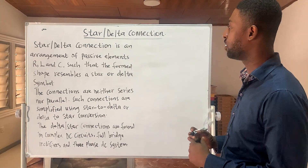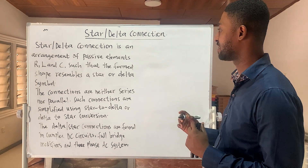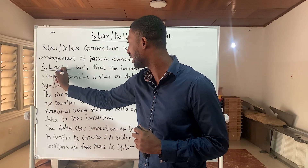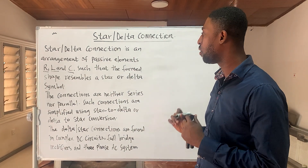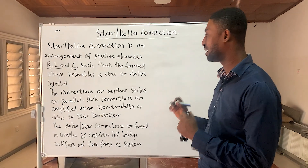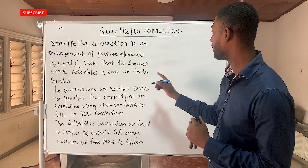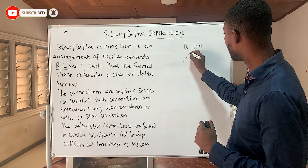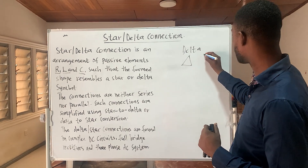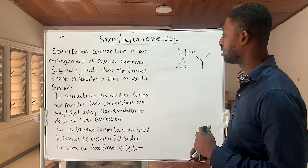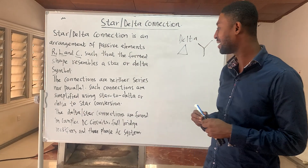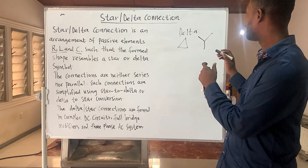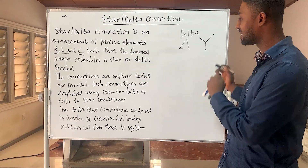Star or delta connection is an arrangement of passive elements — resistor, inductor, and capacitor — such that the overall shape resembles a star or delta symbol. This is the symbol for delta, and this is the symbol for star. Now these connections are neither series nor parallel.